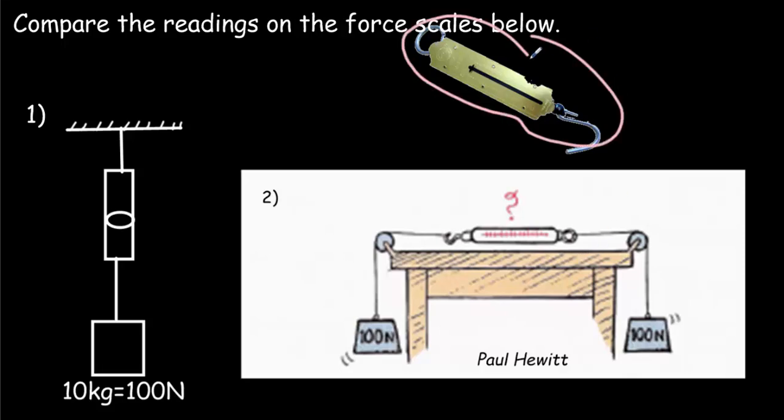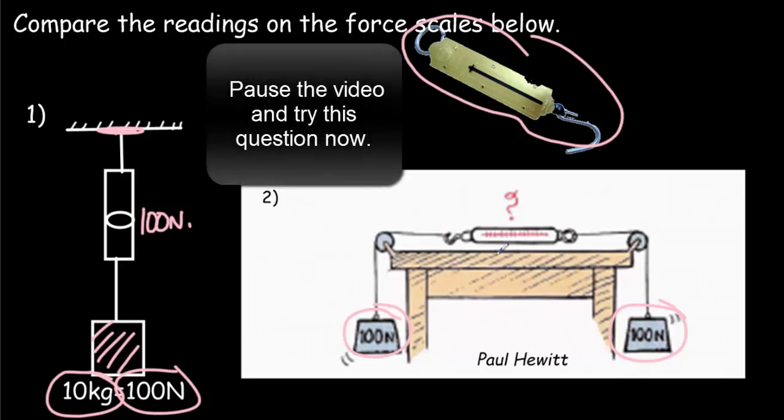One last little conundrum. You've probably used force scales like this one in the classroom. And typically, we hold one end of it and we put a weight on the other end. We let it hang. And if, let's say, we put a 10 kilogram mass there, we would get a reading here of 100 newtons. Let's suppose we use the scale a little bit differently. We put 100 newton weight on one side, another 100 newton weight on the other side, and then use pulleys to attach those two weights to either end of our scale. What will the reading on the scale be? Pause the video and try this question now.